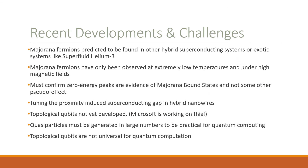Here are some recent developments and challenges of Majorana bound states. Majorana fermions have been predicted and actually found in other hybrid superconducting systems, or even exotic systems like superfluid helium-3. A major challenge is that they have only been observed at extremely low temperatures and under high magnetic fields. We must also confirm that the zero energy peaks are actual evidence of Majorana bound states and not some other pseudo-effect. An experimental challenge is tuning the proximity-induced superconducting gap in the hybrid nanowires. As a result, topological qubits have not yet been fully developed. However, the future looks bright, as big companies like Microsoft are working on this challenge. To be practical for quantum computing, these quasiparticles must be generated in large numbers, and topological qubits are also not yet universal for quantum computation because of the missing phase gate.